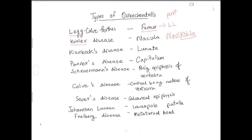The third one is Kienböck's disease. We covered the first K — Köhler's with navicular. The second K is related to its next letter, L, which stands for lunate. So Kienböck's disease is related to the lunate.